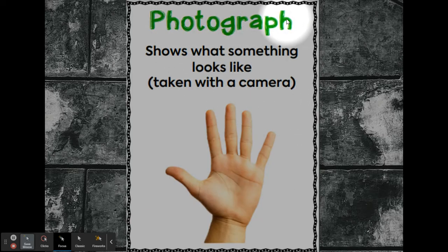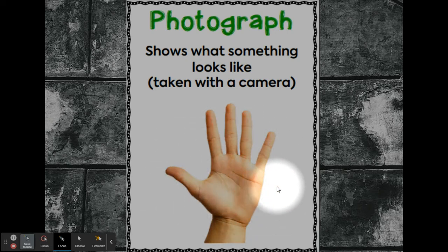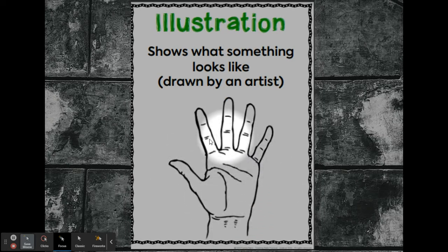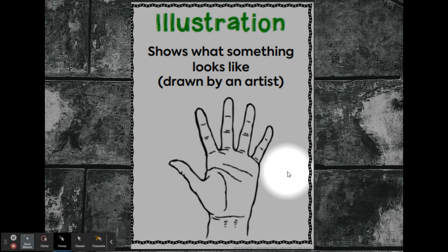A photograph shows what something looks like and is taken with a camera. This is a picture taken with a camera of a hand — an actual human being's hand. An illustration also shows what something looks like, but it's drawn by an artist instead of being taken with a camera. An illustration should be a term you're familiar with because every book we read aloud in class usually has illustrations.